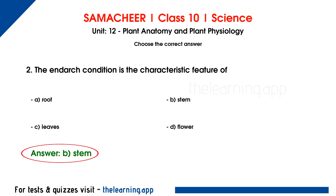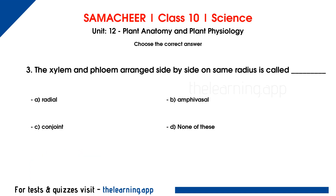In the endodermis condition, there is a vascular tissue system. In the vascular tissue system, there are three types of vascular bundles. In the concentric bundles, there is one condition — the endodermis condition.